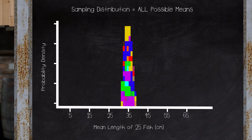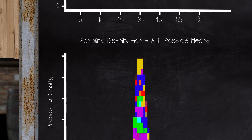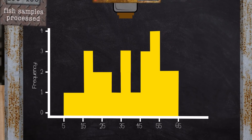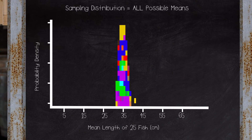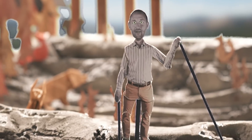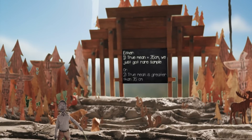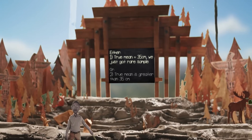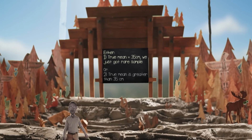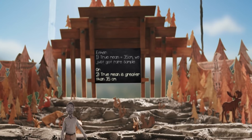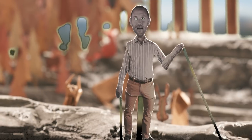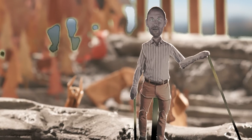In other words, if the true mean length really is 35 centimeters and we took 100 different samples of 25 fish, we'd expect that only one of the 100 samples would give us an average length of 41 centimeters or more just by chance. From here, we can conclude that one of two things must have happened: either our initial assumption that the mean length is 35 centimeters is correct and we ended up with a fairly rare sample mean estimate of 41 just by chance, or our initial assumption is incorrect and the true population mean really is greater than 35 centimeters. We will never know for sure which of these is true in reality, but we can decide which we believe is more likely to be true.